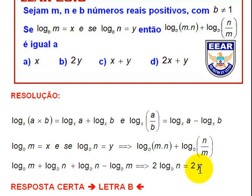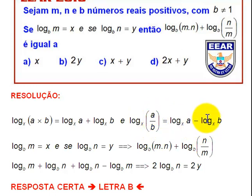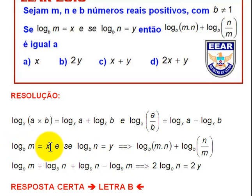É só compreender o seguinte: o logaritmo de um produto se transforma em uma soma de logaritmos, e o logaritmo de um quociente se transforma em uma diferença de logaritmos. Nossa resposta é 2 log na base B de N, que é 2Y, já que o log na base B de N era Y. O log na base B de M era X, mas ele desapareceu: log na base B de M menos log na base B de M virou 0.